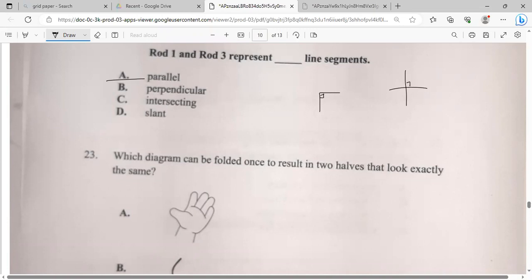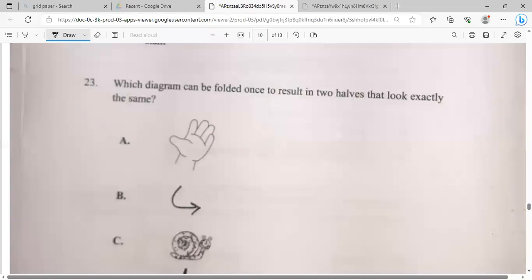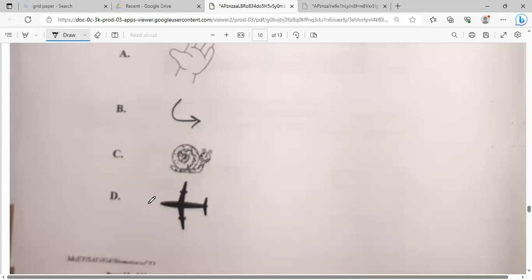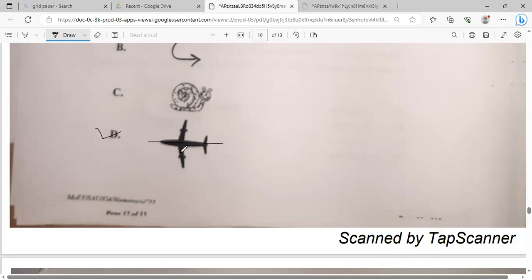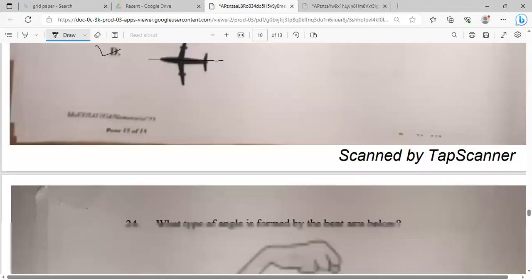Which diagram can be folded once to result in two halves that look exactly the same? The plane that everybody wanted. And that would be the plane. And this is the line of symmetry. So that would be D. My line is a symmetry. You already should fold on this. The two wings would come together. This part would come together. That this part would also come together.